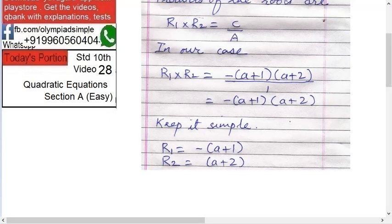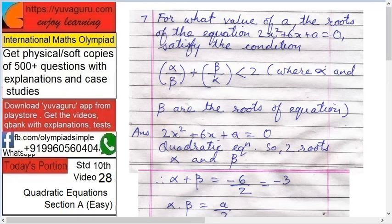Also you have that formula minus b plus or minus root of b square minus 4ac upon 2, but it's of no use when you can find it simply. Why go for a difficult situation?